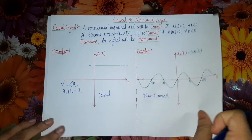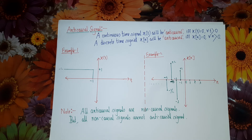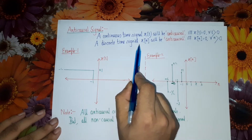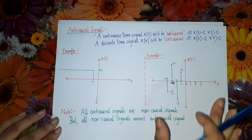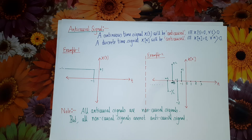Let us now come to the definition of anti-causal signal. A continuous time signal x(t) will be an anti-causal signal if and only if x(t) is equal to 0 for all t greater than 0. For the signal to be anti-causal, the only necessary condition is that the amplitude of the signal should be 0 in the positive time axis. In other words, no portion of the waveform should lie in the positive time axis; the complete waveform should lie in the negative time axis.